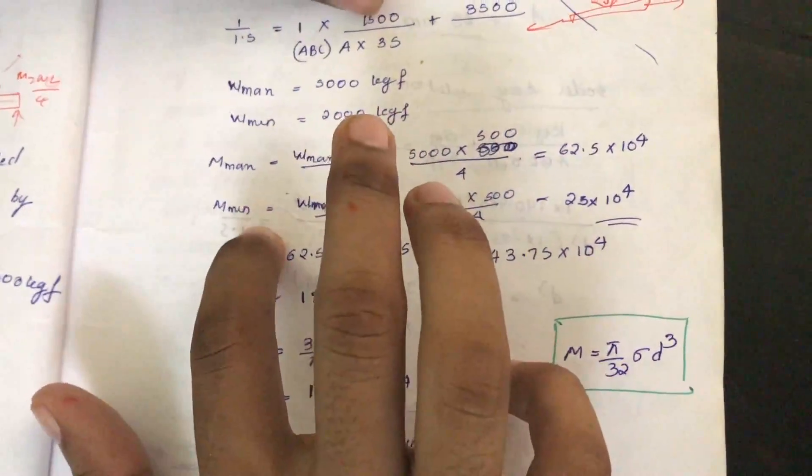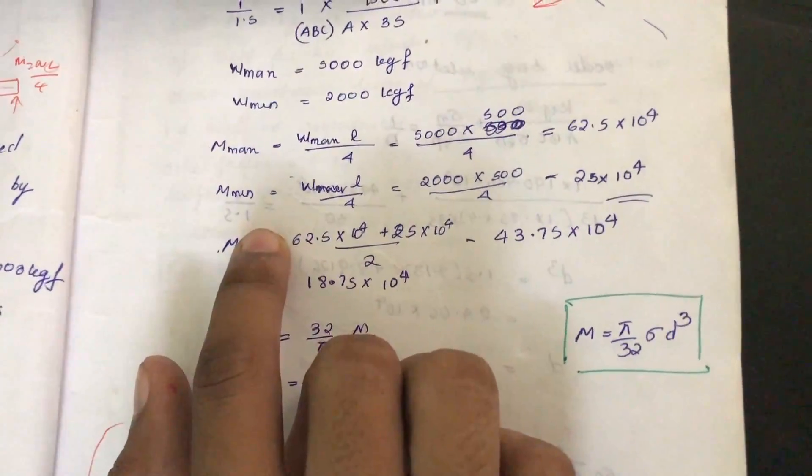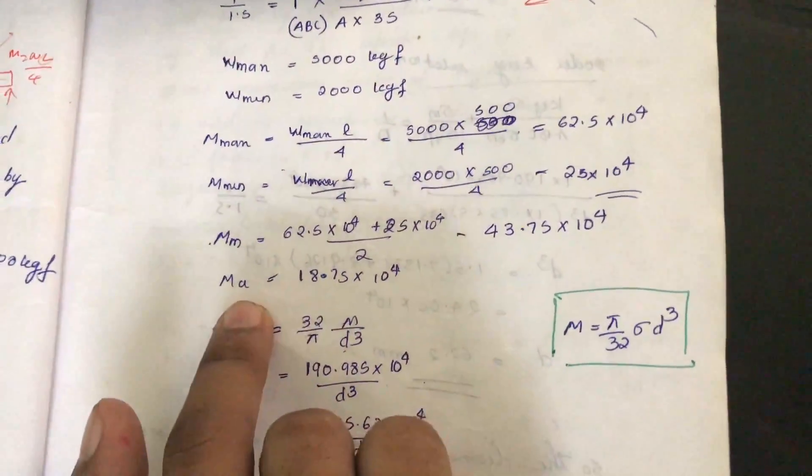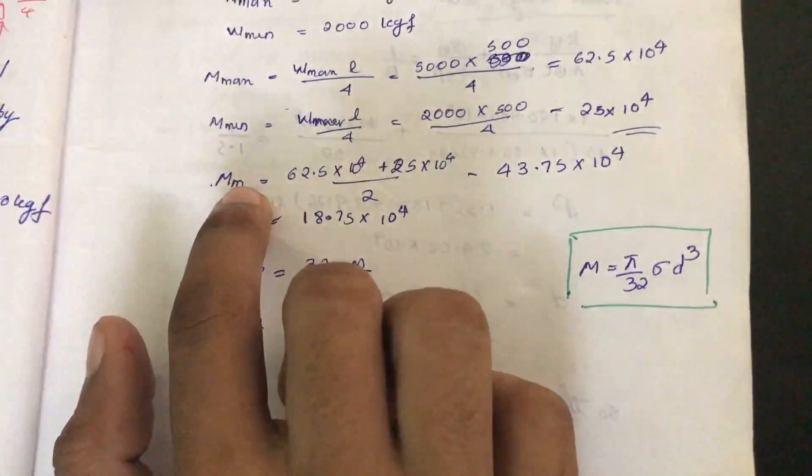If M max and M minimum are given, then M mean and M alternate can be found. M mean equals (M max plus M minimum)/2. M alternate equals (M max minus M minimum)/2.